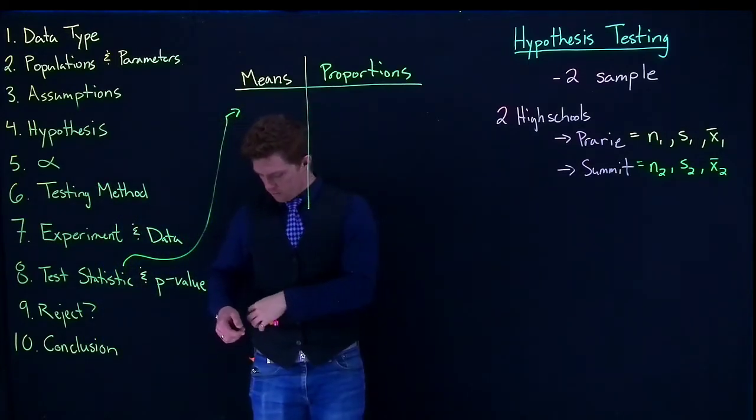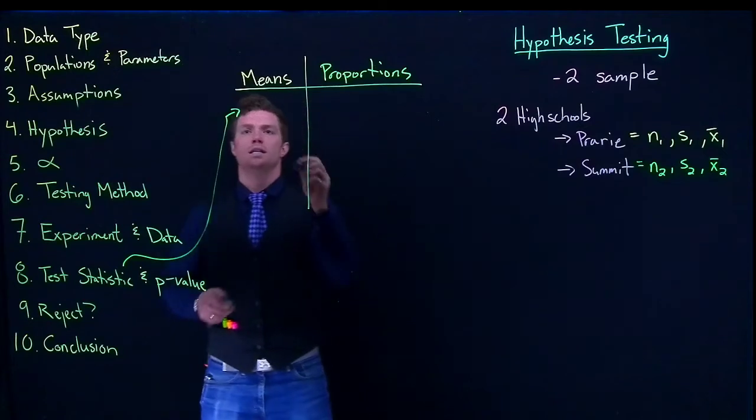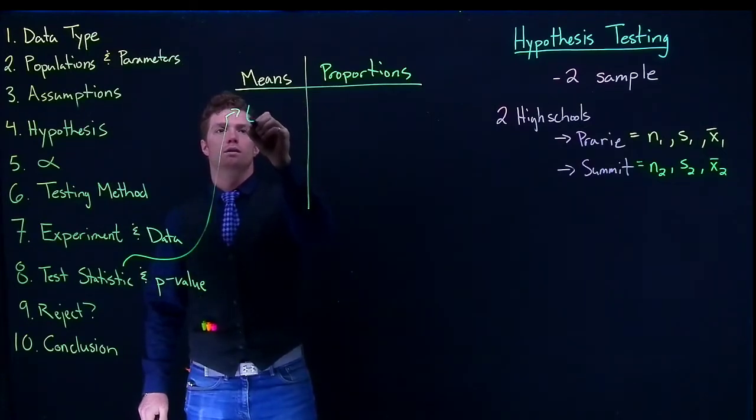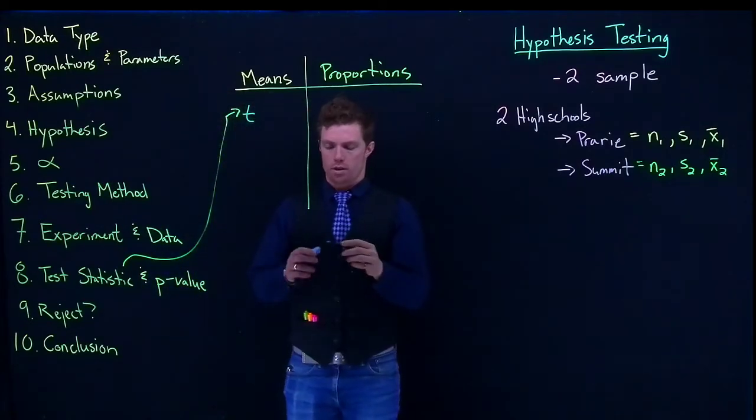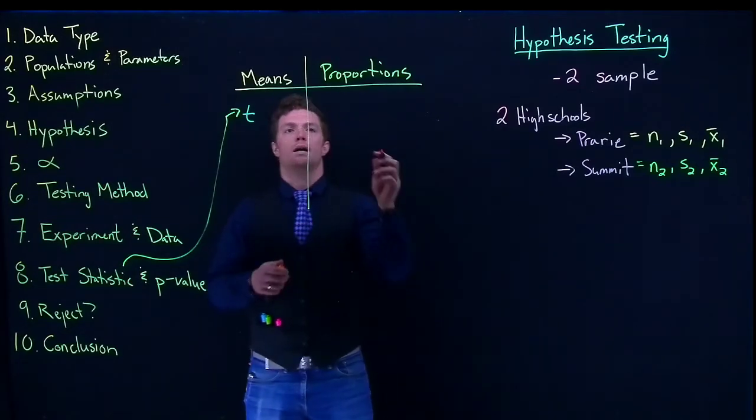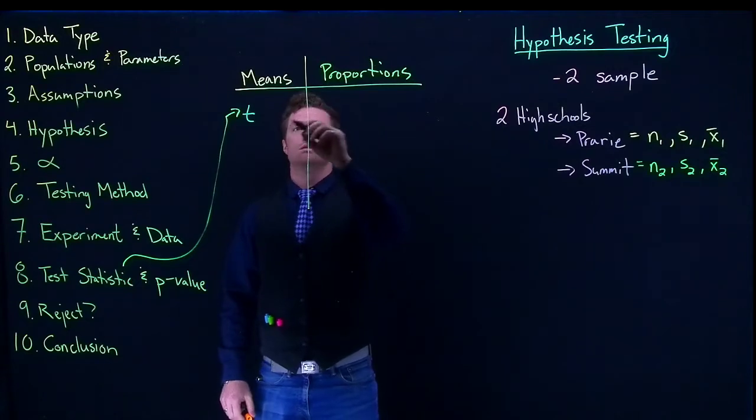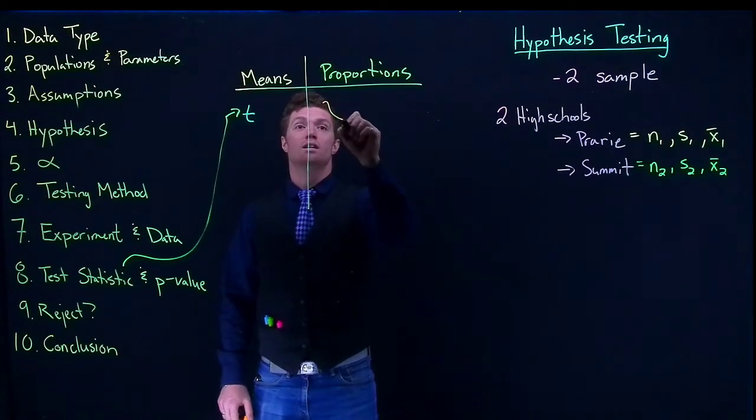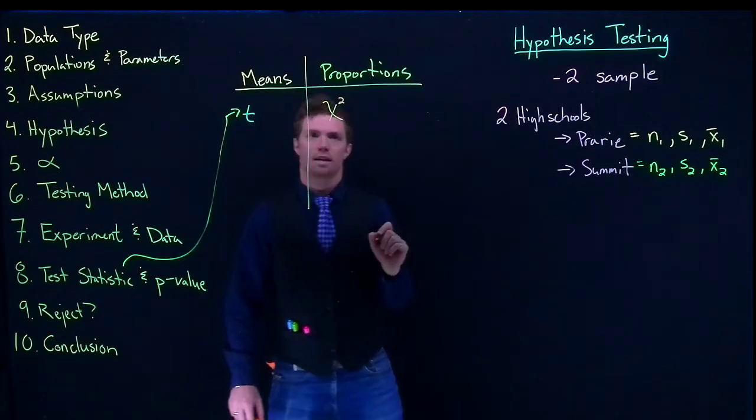All right, so if we're dealing with our means, we're basically going to be dealing with a t-score, and with our proportions we're going to need to know chi-squared, so it looks like this.